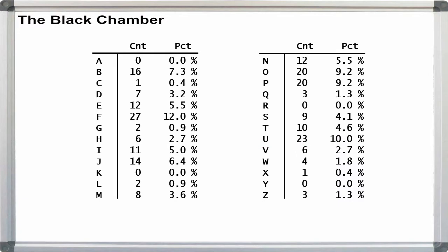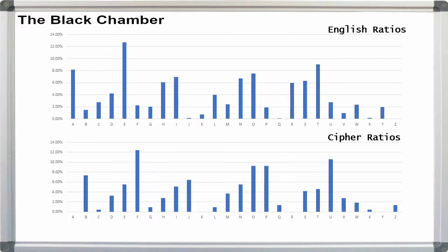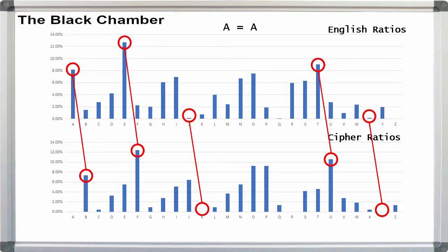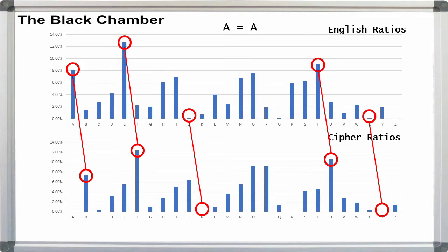You might get an idea of the kind of cipher used here just by looking at the numbers. But let's use a graph comparison. Comparing our distribution at the bottom with the normal English graph at the top, the peaks and valleys don't exactly line up, meaning that this probably isn't a transposition of some kind. But we do have distinct peaks and valleys, indicating that we may have some kind of Caesar shift. If we shift the cipher graph one position to the left, it looks like we have a match.